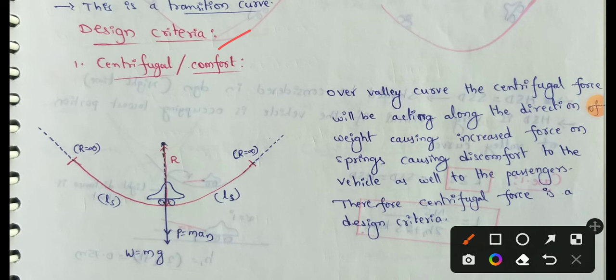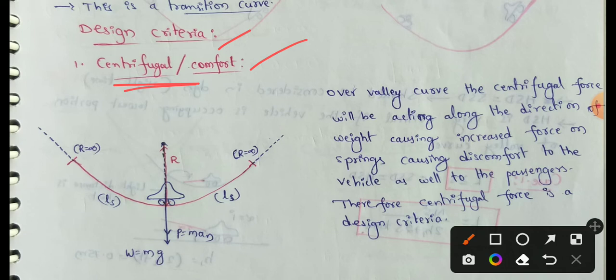Let's look at the design criteria for valley curves. First is driver and passenger comfort, which is the centrifugal or comfort criterion — specifically, the rate of change of centrifugal acceleration. Next is the vehicle headlight sight distance criterion. Third is the cross-drainage control at the lowest point of the valley curve.